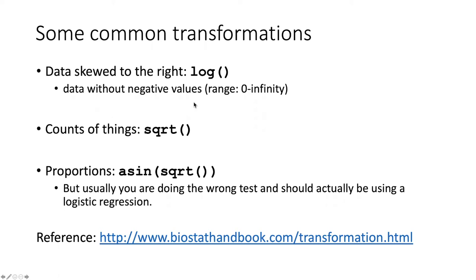Data that tends to start with zero and go to infinity tends to have this kind of skewed to the right distribution. And that can usually be fixed with a log transformation.